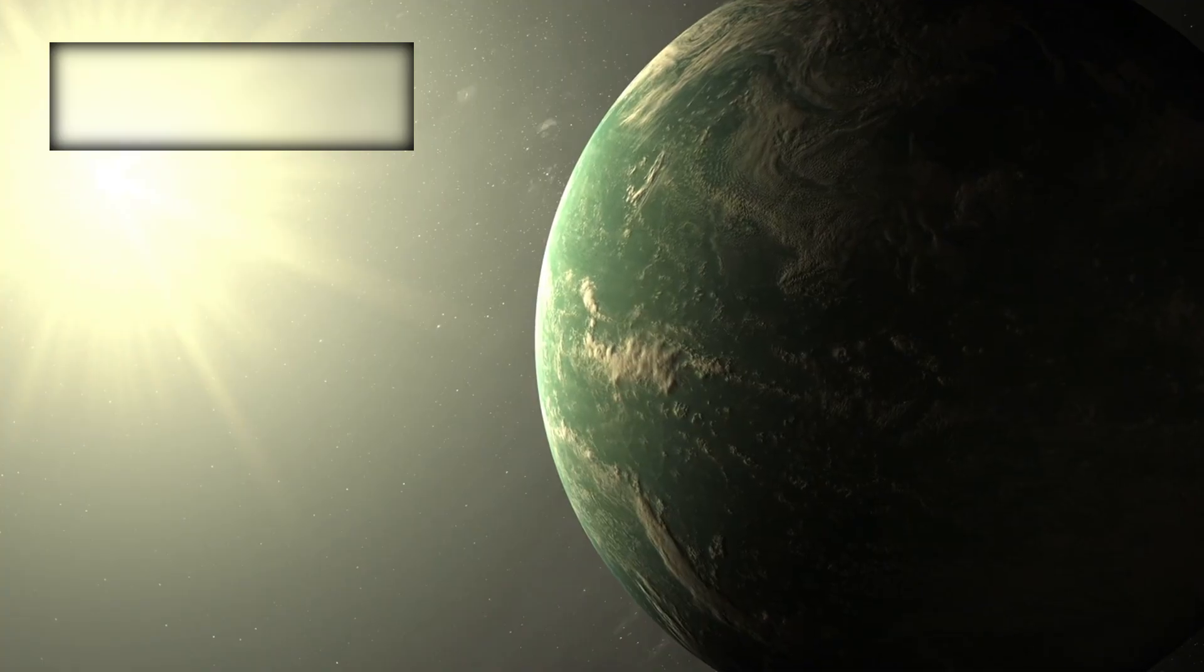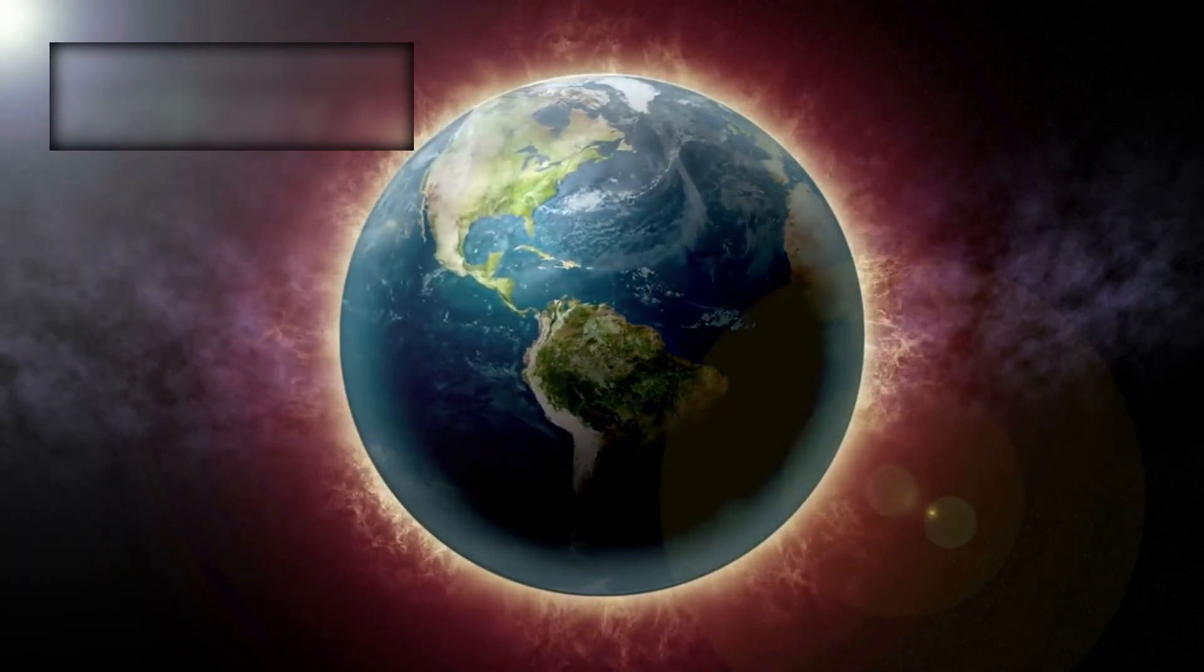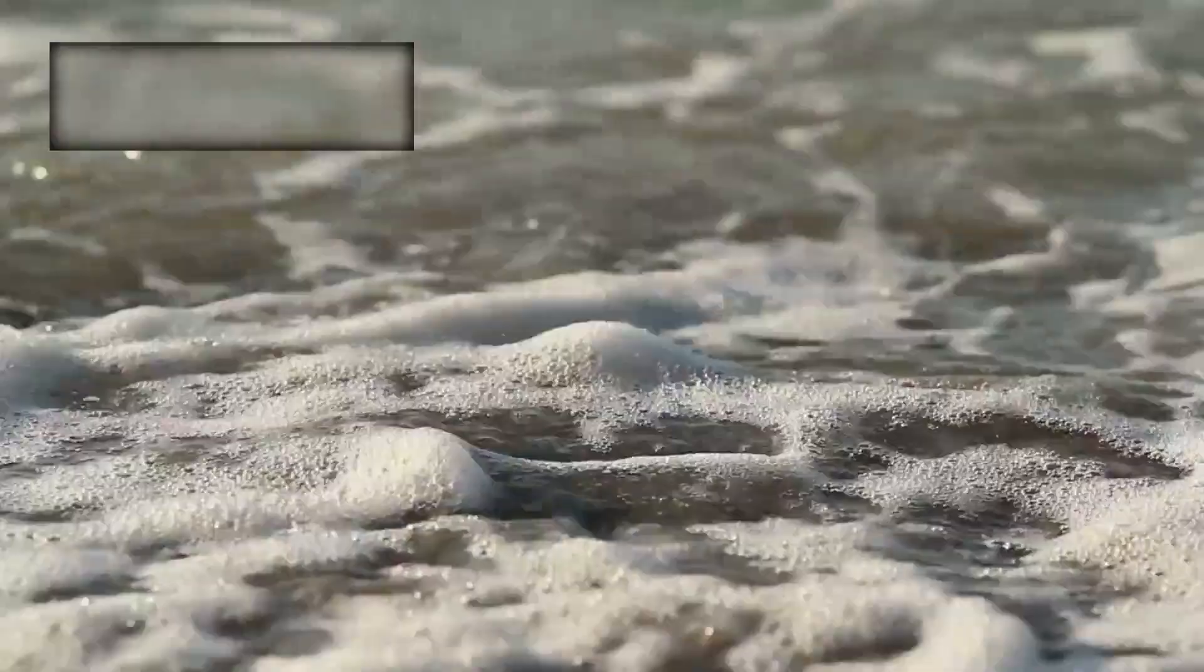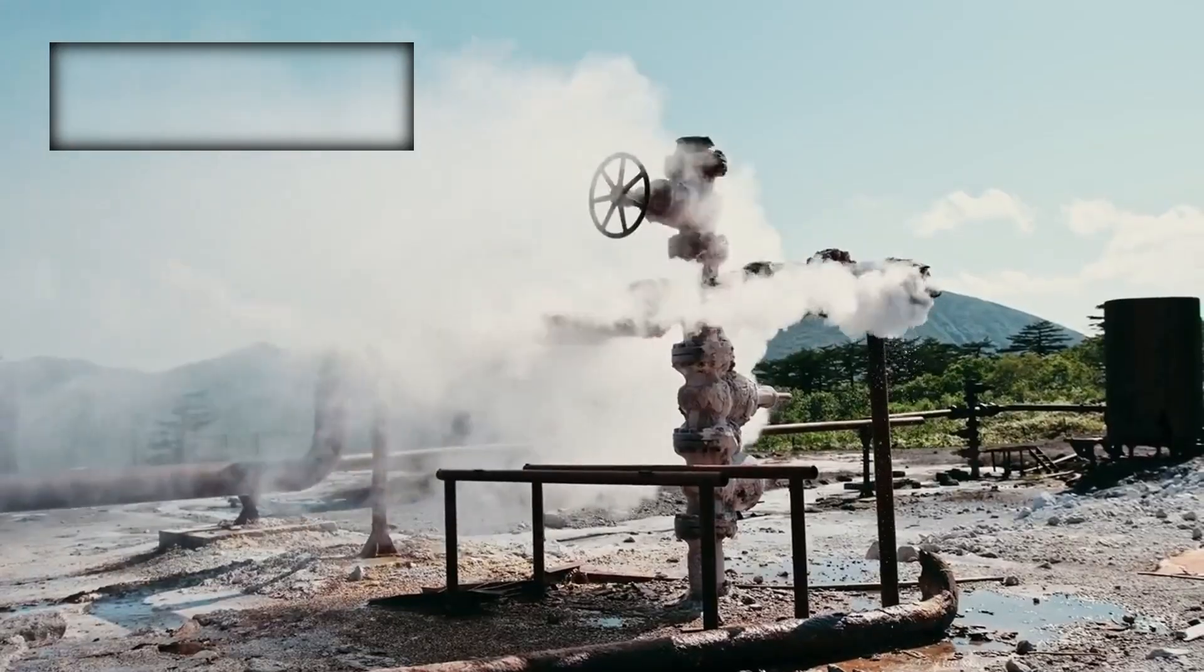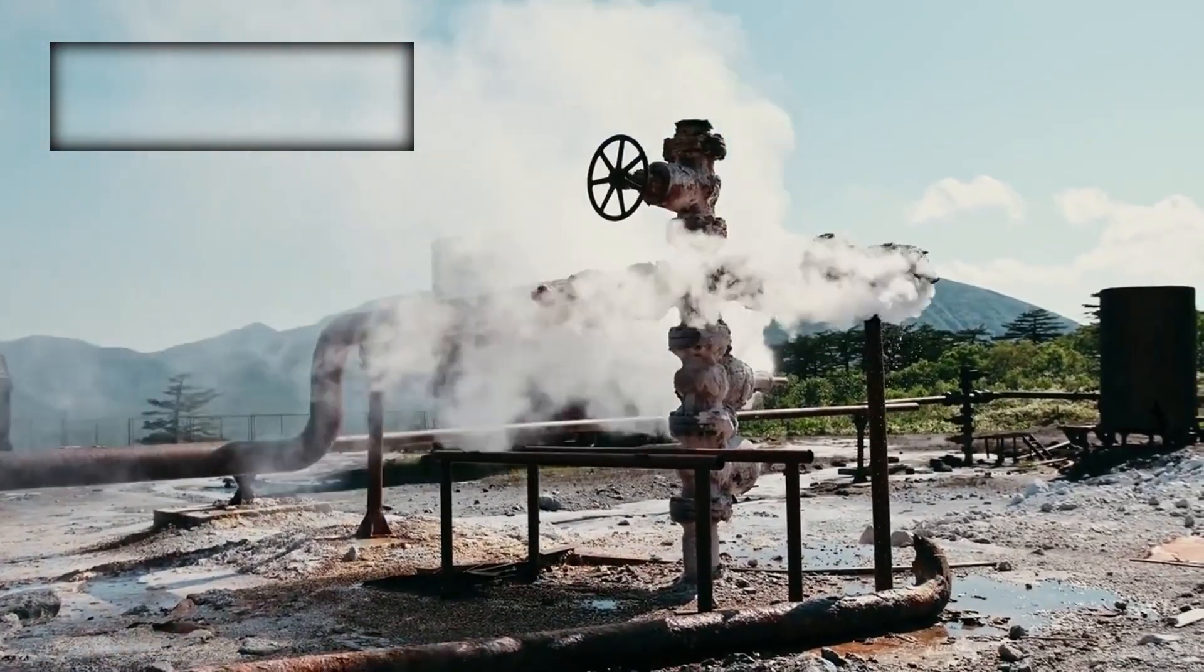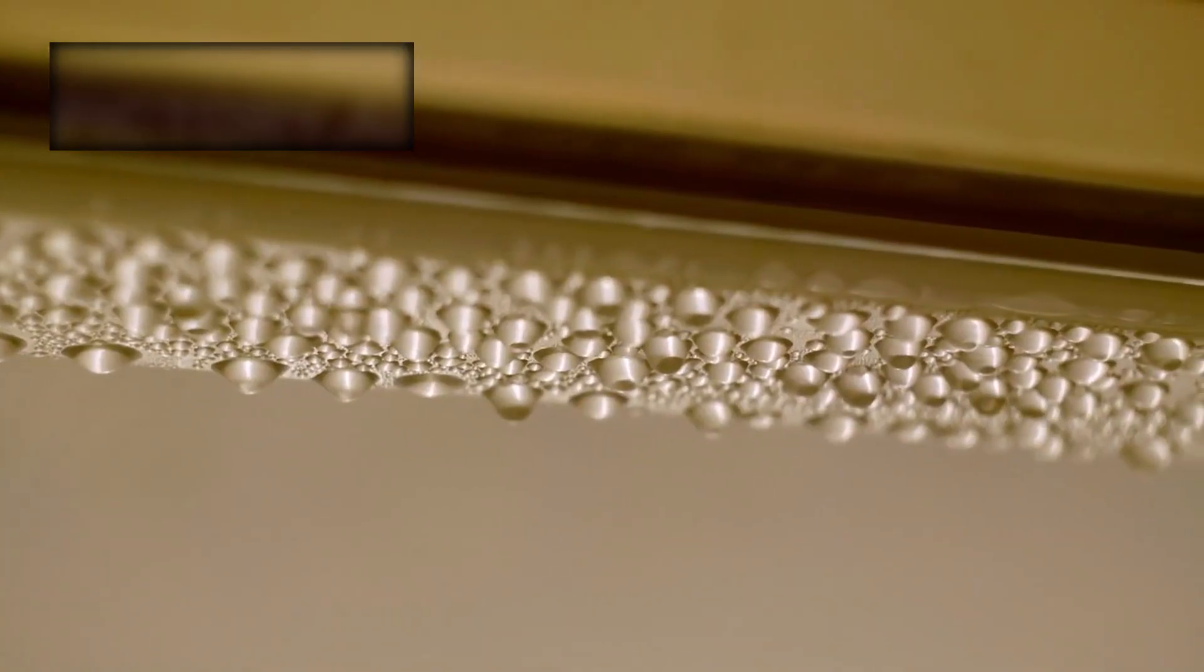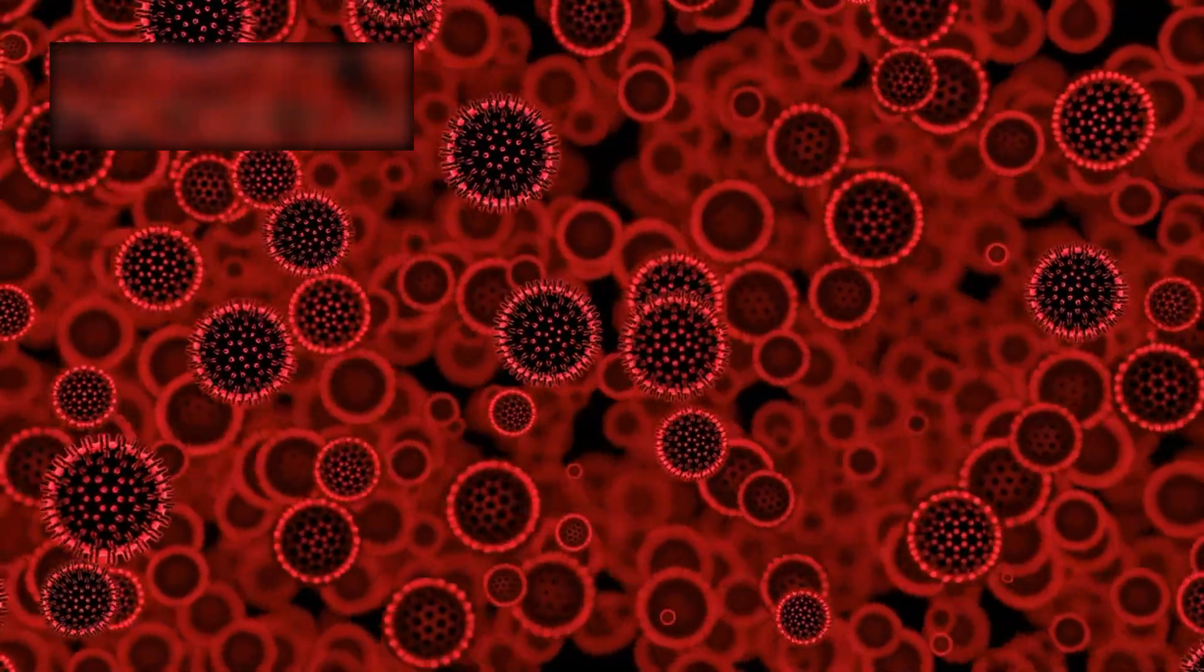This planet is immense: over 2.6 times larger than Earth, nearly 9 times more massive. Its gravity stronger, its atmosphere denser, its oceans deeper and broader than any on Earth. And yet, despite its alien scale, K-218b rests in a remarkable location: the habitable zone of its star. That delicate region where water can remain liquid, where temperatures are neither too hot nor too cold, where the spark of life is most likely to ignite.